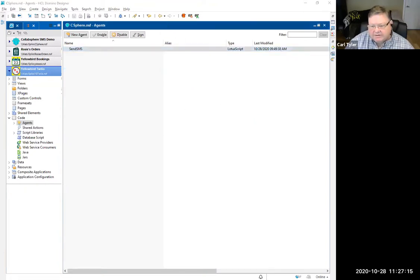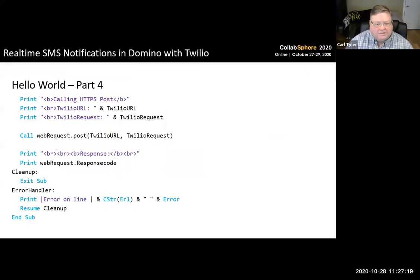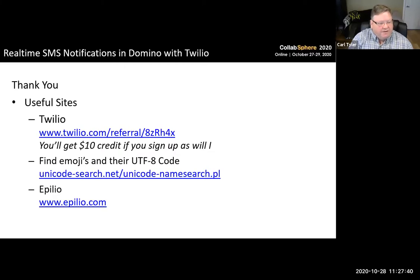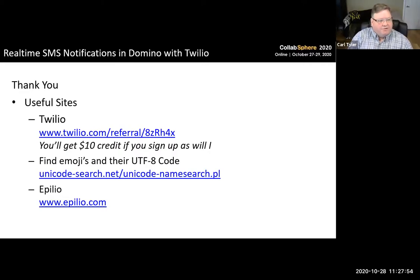I kind of rushed through that really quickly, but there's plenty of time for questions. Things that are useful to you: the Twilio website. There's the referral URL, or just go to twilio.com. There's also a website I use to find emojis and their UTF-8 code — you can type in things like 'clown' or whatever you want to search for, and it gives you the UTF codes. And there's our company website — if you want to get a hold of me, you can call me or send me an email. Happy to answer any questions.